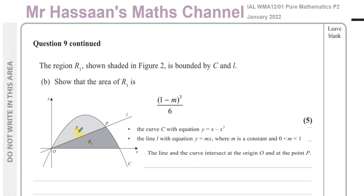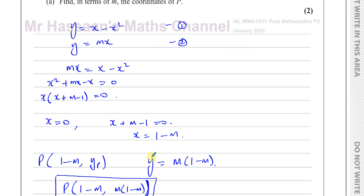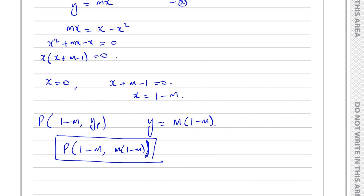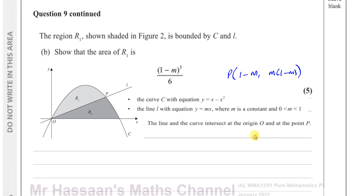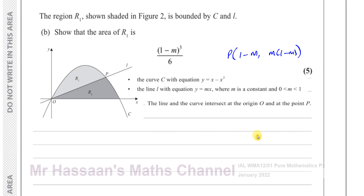Now for part B. The region R1, shown shaded in figure 2, is bounded by curve C and line L. We've got to show that the area of R1 is given by a specific expression. We already know the coordinates of P are (1 minus m, m times 1 minus m), and we know the equations of both the curve and the line.